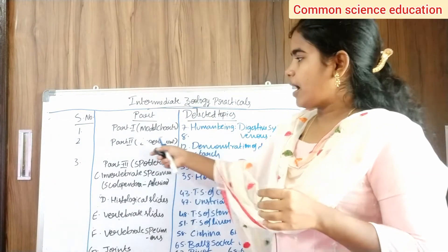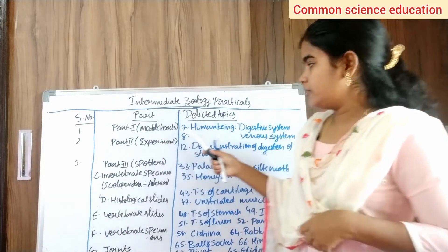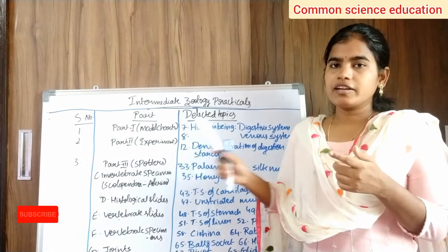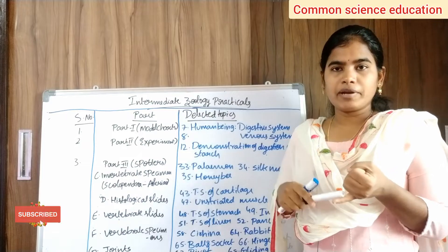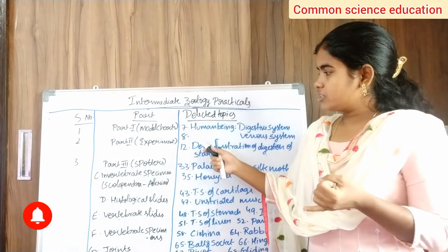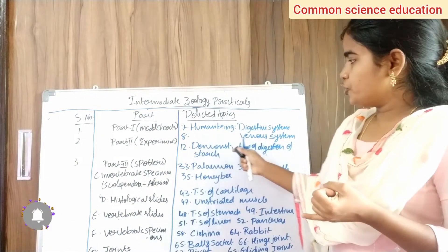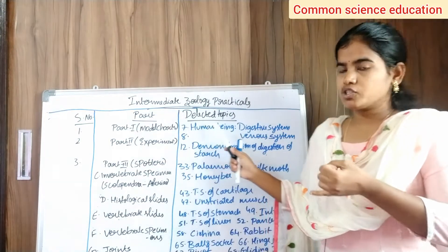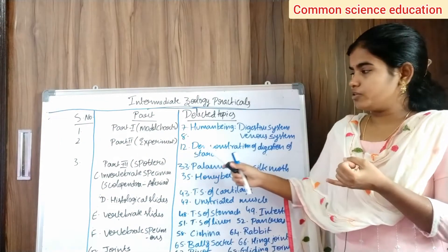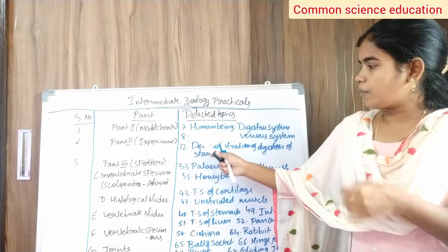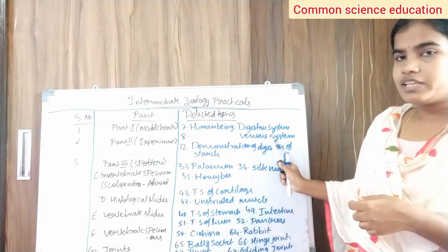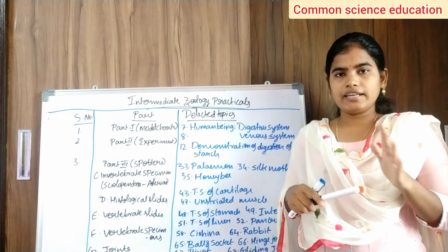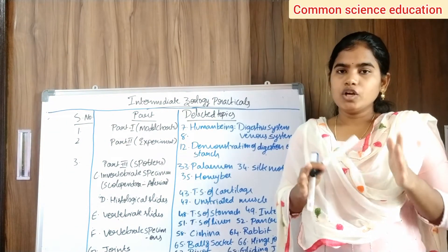For Part 1, we choose model charts. We number them in the practical record. Number 7 is the human digestive system — draw that diagram. Number 8 is the human venous system — draw the venous system diagram. Only the arterial system diagram needs to be drawn.